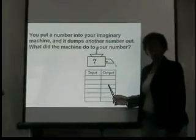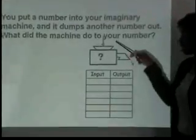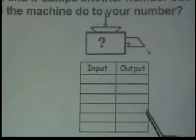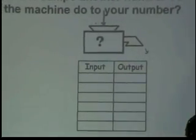Here we have our imaginary function machine. Once you place a number in, thus the input section, a different number comes out, thus the output section. Now let's see how that works.